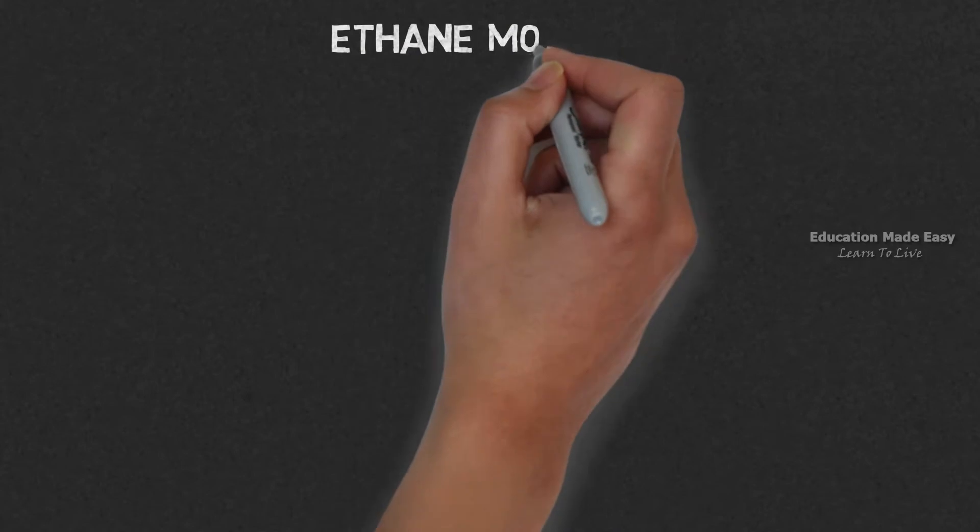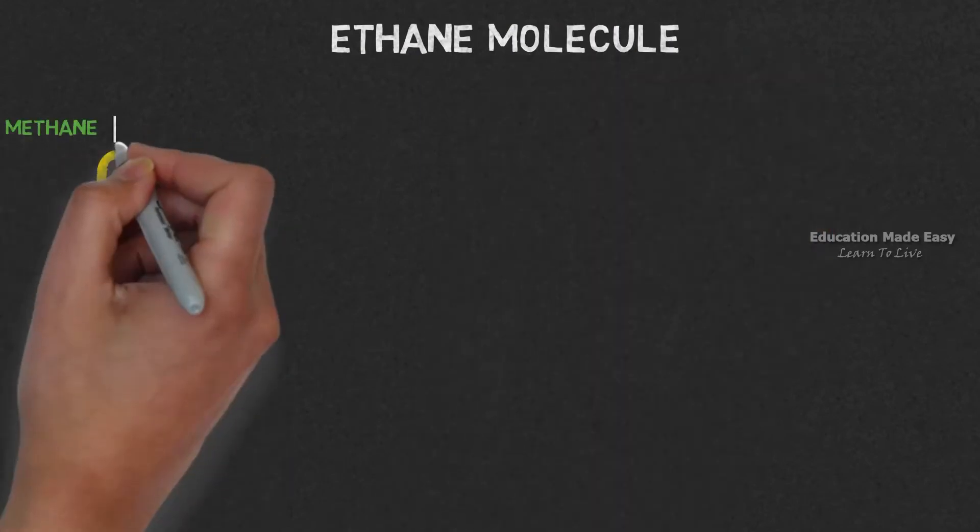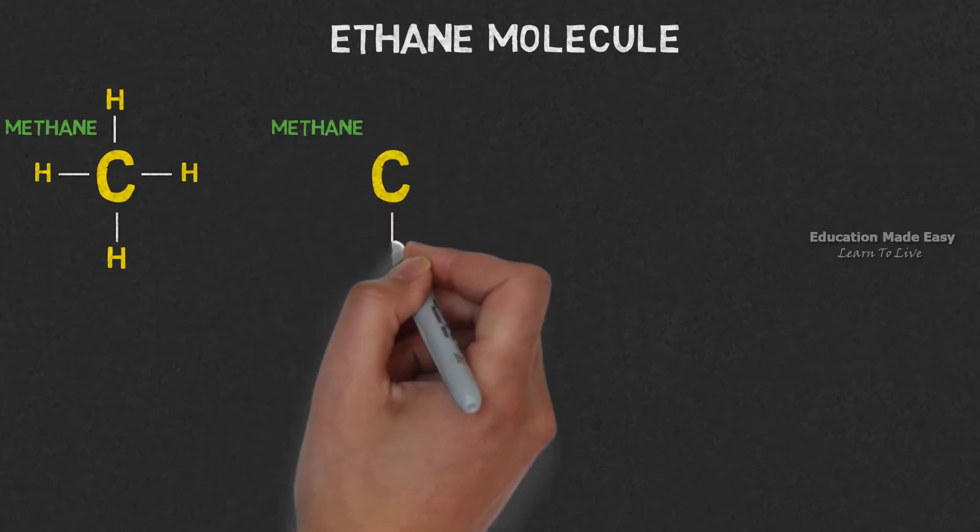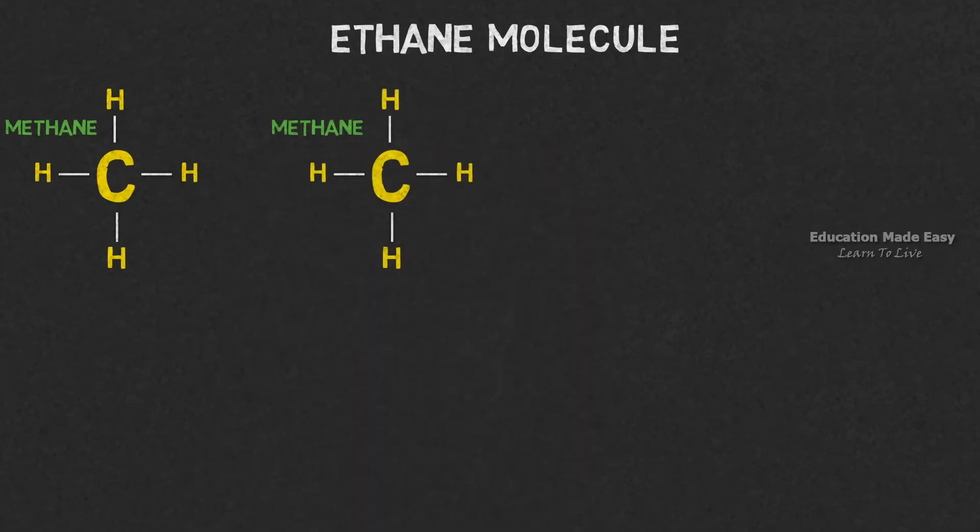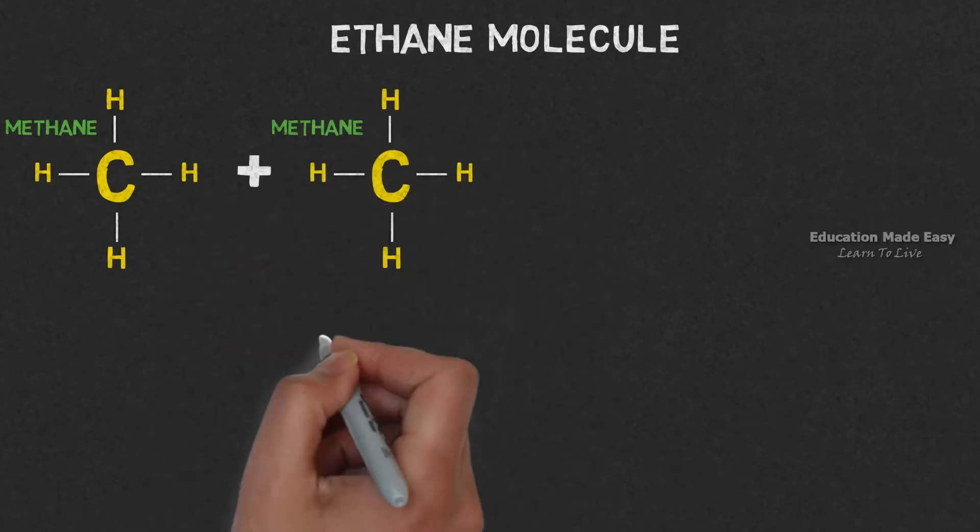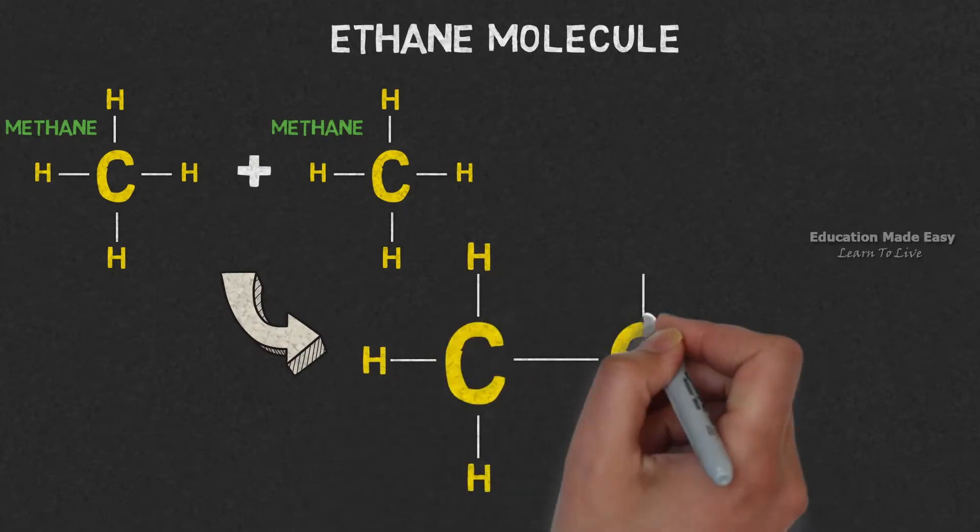Let us first learn about the ethane molecule. Ethane can be formed from methane which is CH4. Two methane molecules combine to form an ethane molecule and H2 gas.